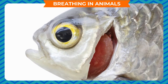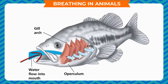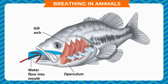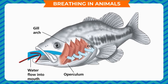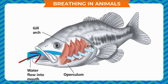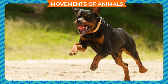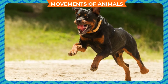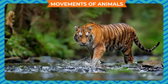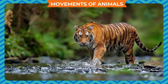Most aquatic animals such as fish, crabs, prawns, and tadpoles have gills in place of lungs to breathe. As water reaches the gills, the oxygen present in the water is absorbed by the blood and carbon dioxide is breathed out through the gills.